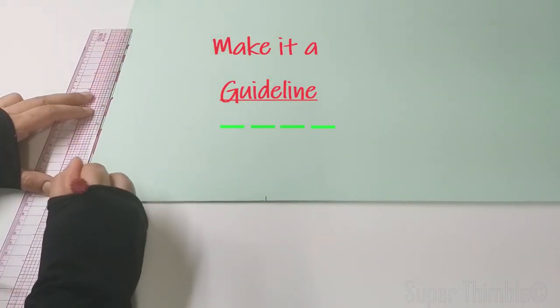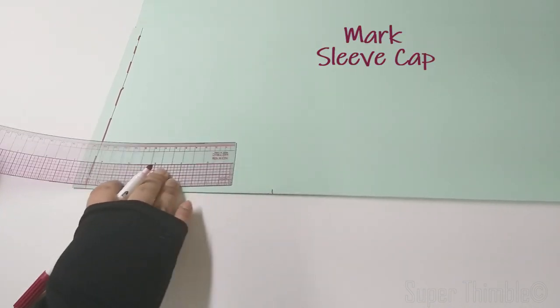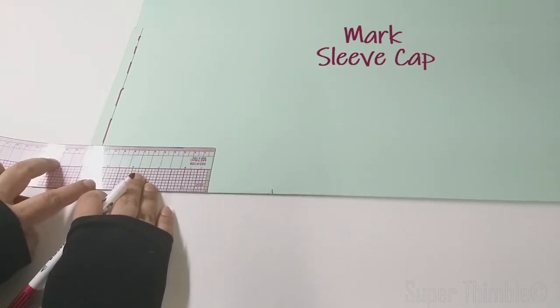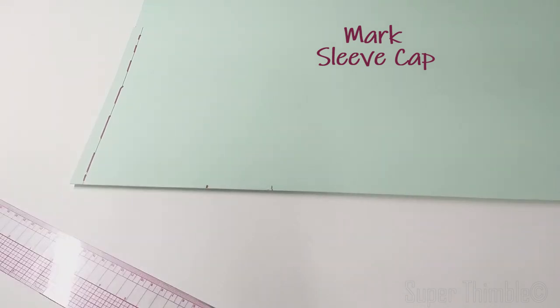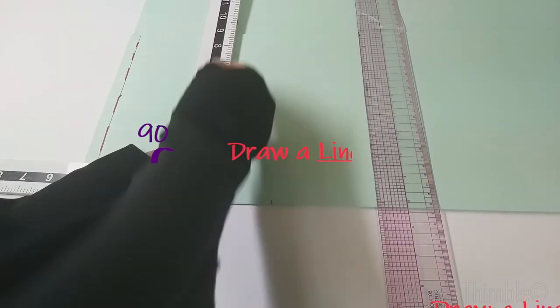Once marked, make it a guideline. Measure the sleeve cap. Let's assume it's 4 inch. Start blocking the marked points.